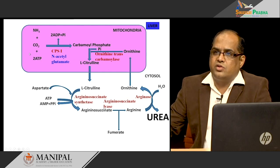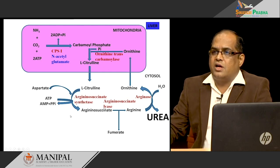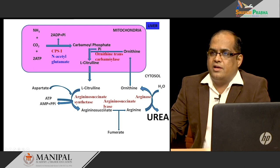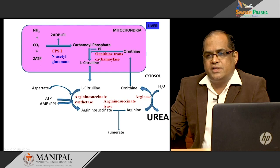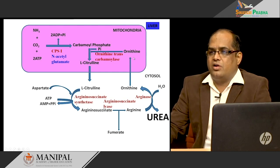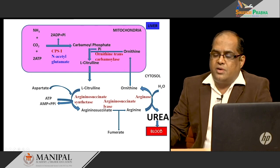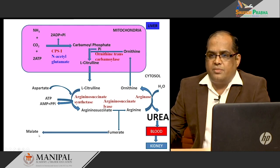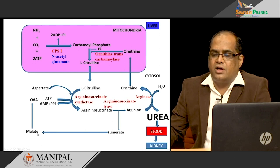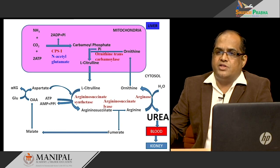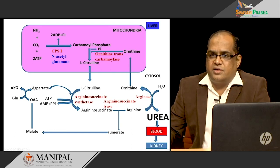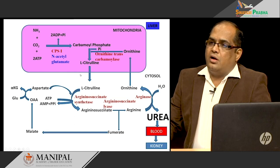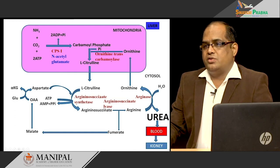Ornithine goes back into the mitochondria and the cycle continues. Ornithine is a byproduct that is reutilized again, similar to oxaloacetate in the TCA cycle. The urea produced is released into the blood, taken up by the kidney, and excreted in the urine. Fumarate can be converted back into malate, then into oxaloacetate, and by transamination, oxaloacetate is converted back into aspartate to be reutilized. This is the normal urea cycle.